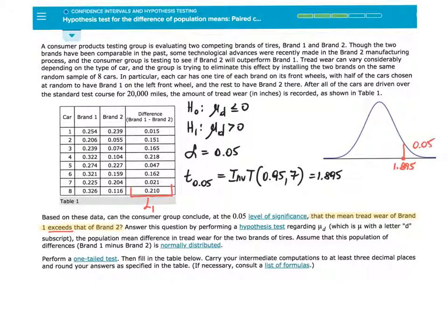Now let's take a look at one more example. This time we will have a right-tail test. A consumer products testing group is evaluating two competing brands of tires, Brand 1 and Brand 2. Though the two brands have been comparable in the past, some technological advances were recently made in Brand 2 manufacturing process. And the consumer group is testing to see if Brand 2 will outperform Brand 1.